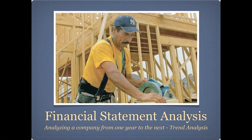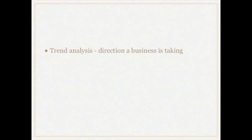This is part three in our financial statement analysis series, where we'll be discussing trend analysis, which is another form of horizontal analysis that we talked about in part two. A horizontal analysis is when we analyze a company from one year to another, and trend analysis is a form of this that allows us to tell what direction the business is taking.